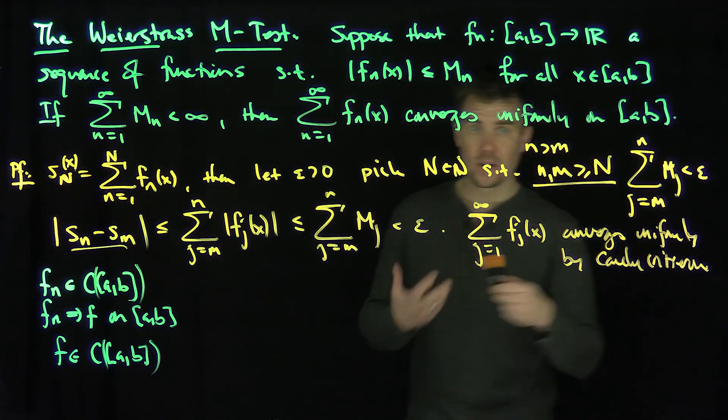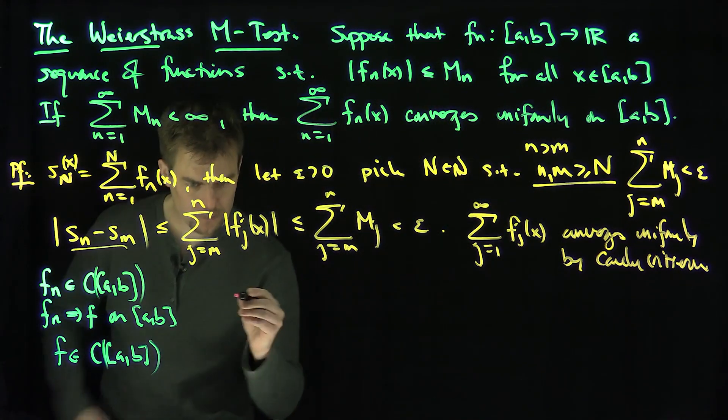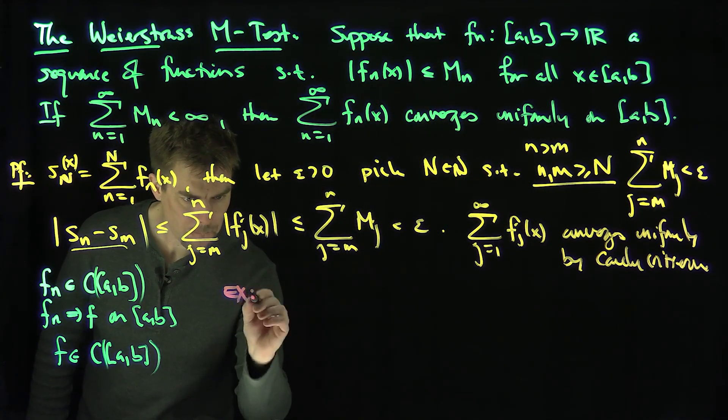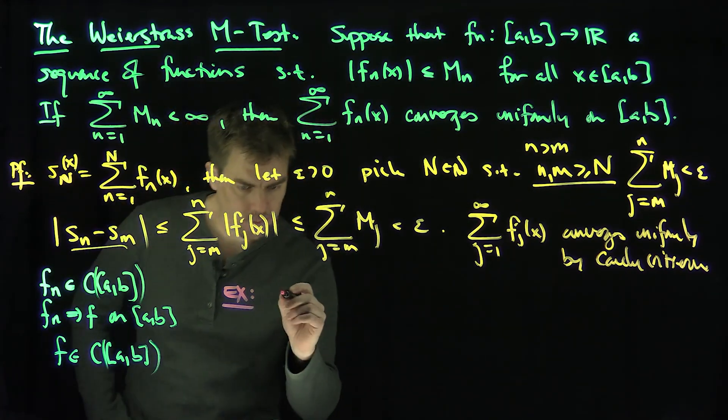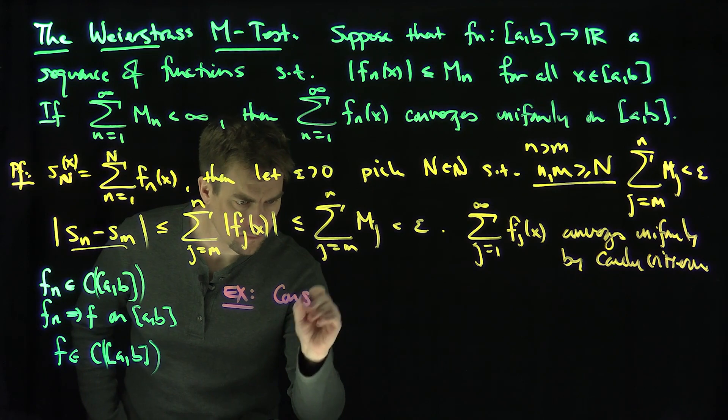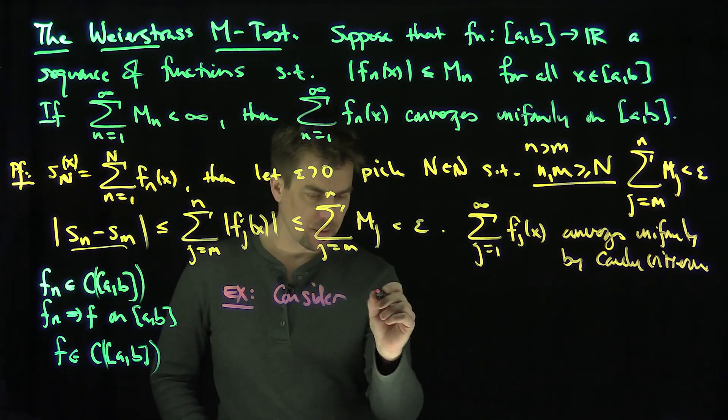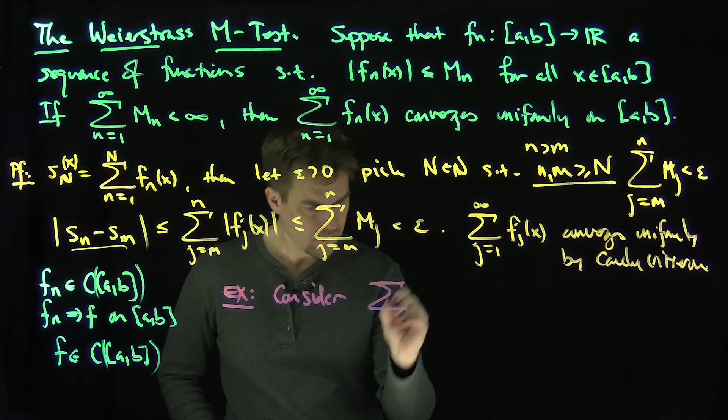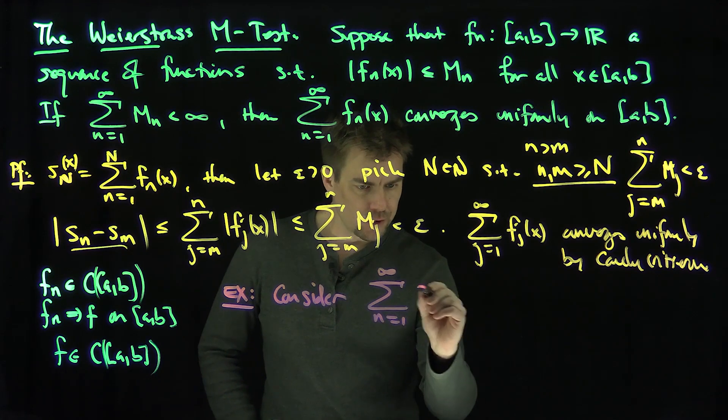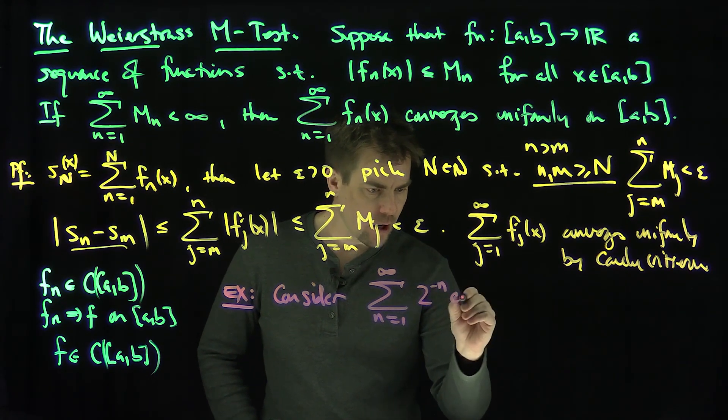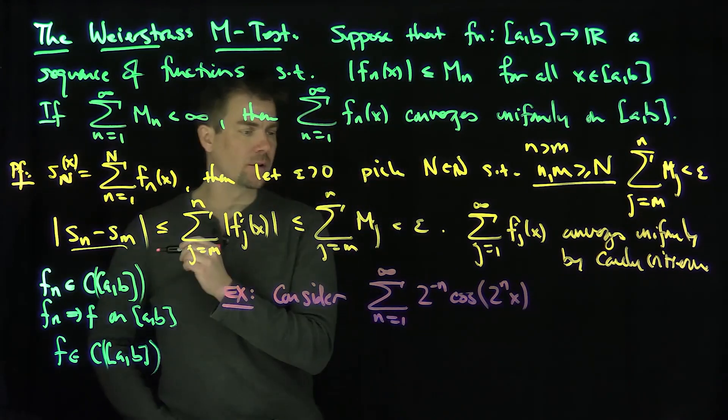This oftentimes helps us for something like the Weierstrass test. So how can the Weierstrass test help us? Here's an example. Let's consider this series: the sum from n=1 to infinity of 2^(-n) cos(2^n x).